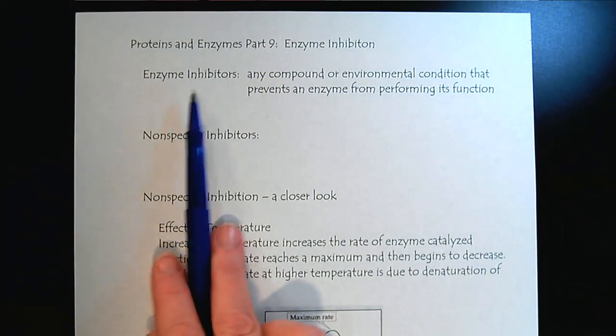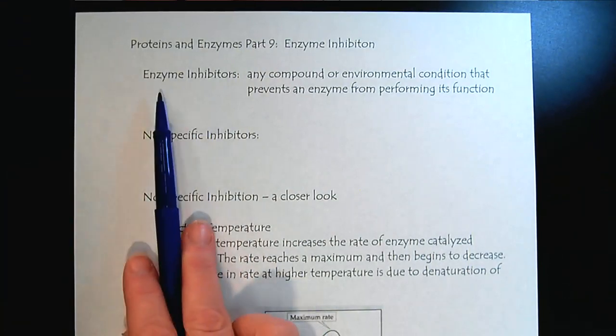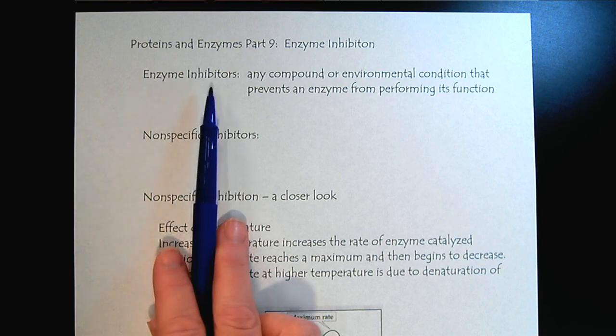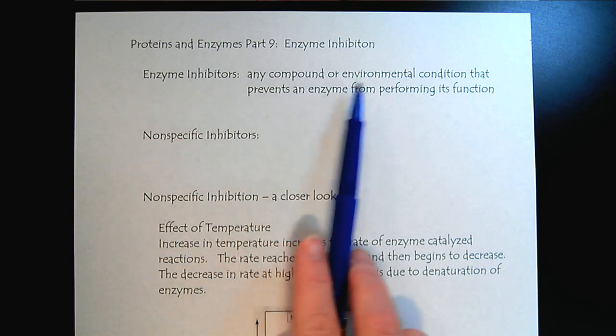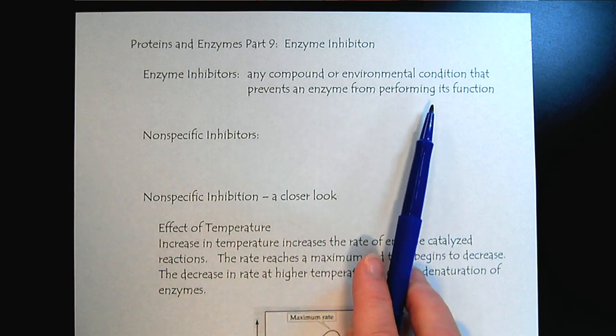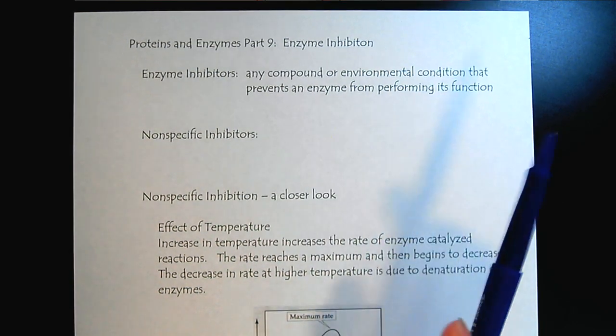Let's get started. So what are enzyme inhibitors? Let's remember that enzymes are proteins that catalyze biochemical reactions, and so an inhibitor is any compound or environmental condition that prevents the enzyme from performing its function, which is catalysis.